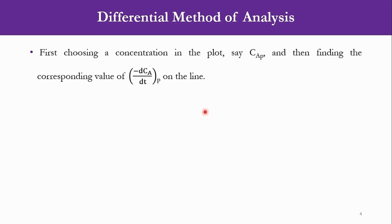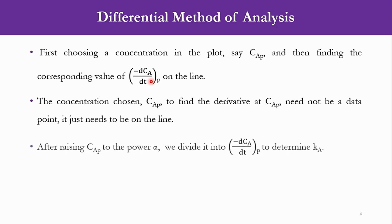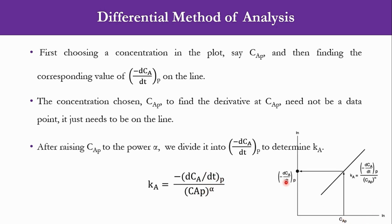In another approach, we choose a concentration at some point p on the plot and find minus dC/dt at that point. The point just needs to be on the line, not necessarily a data point. We first find the value of alpha from the slope. Then in the second step, we find the value of k from the equation. Selecting a suitable value and dividing minus dC/dt by Ca^α gives the answer for k.